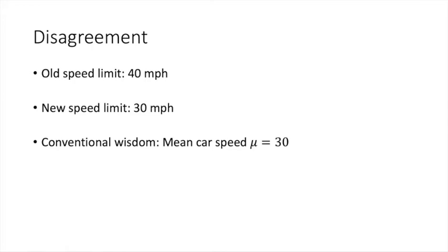Suppose the speed limit on a road was 40 miles per hour, but the government changed the speed limit now to 30 miles per hour. Now the conventional wisdom states that drivers follow the new speed limit and so the mean speed μ must be 30.